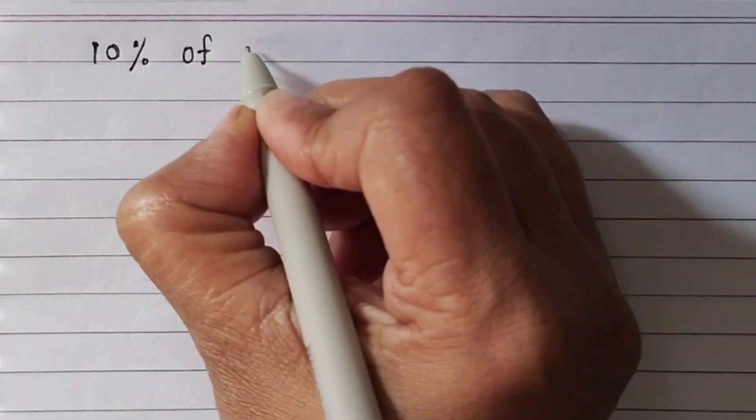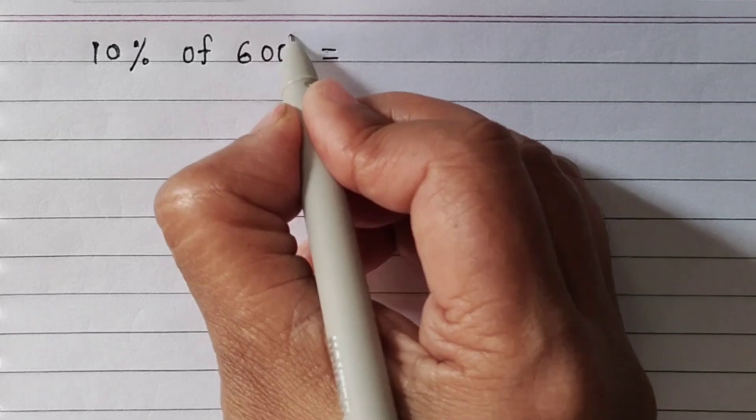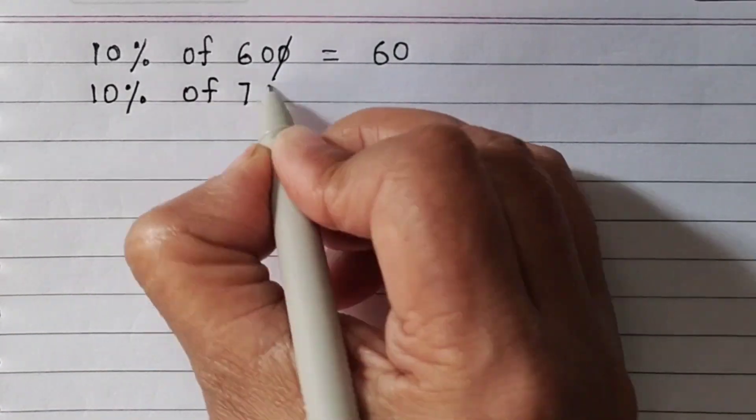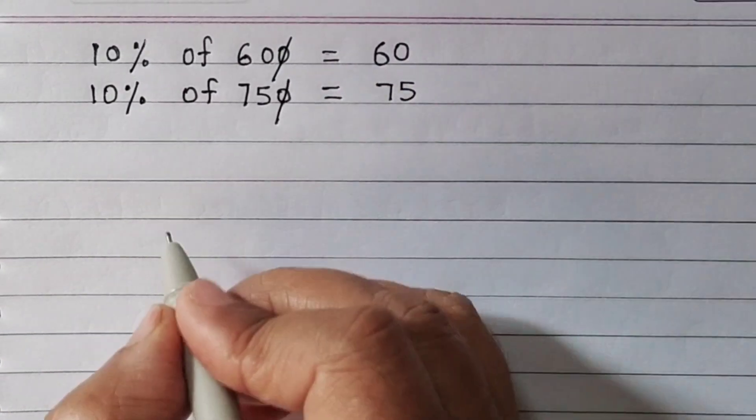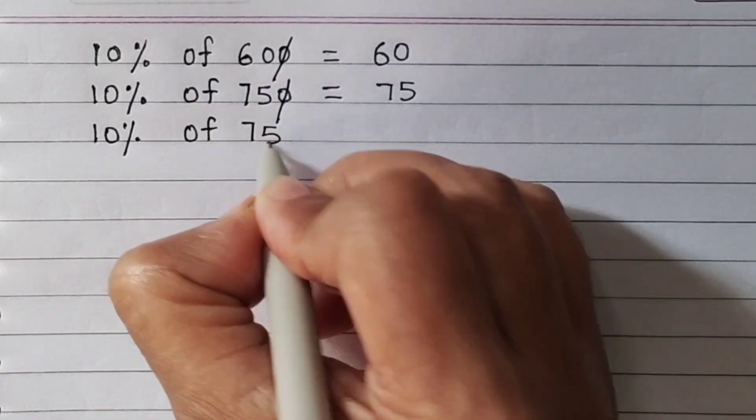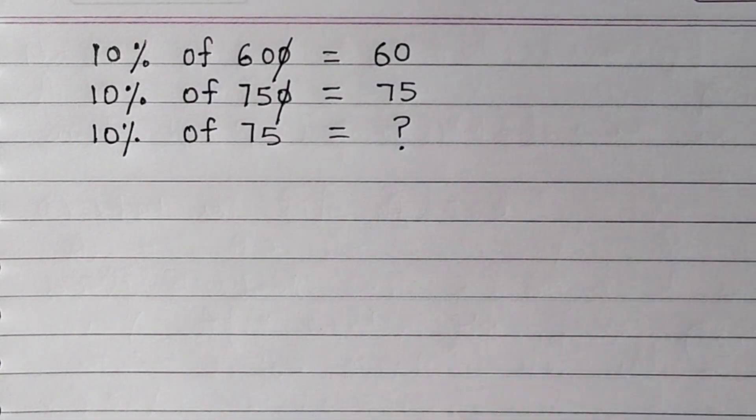For example, 10% of 600 is 60. Just remove the last zero. So 10% of 750 is 75. 10% of 75. Now, there is no zero.